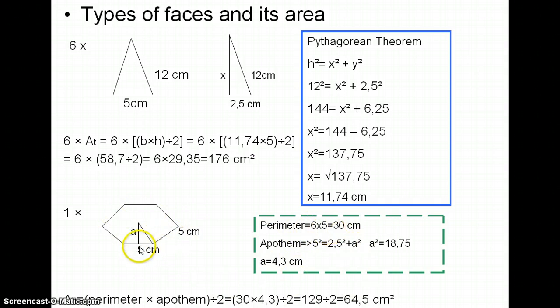The perimeter is the sum of all the sides. So six, because there are six sides, and five because it's the size of each side, so six times five equals 30 centimeters. The apothem is this one right here and we must figure it out by doing the Pythagorean theorem.